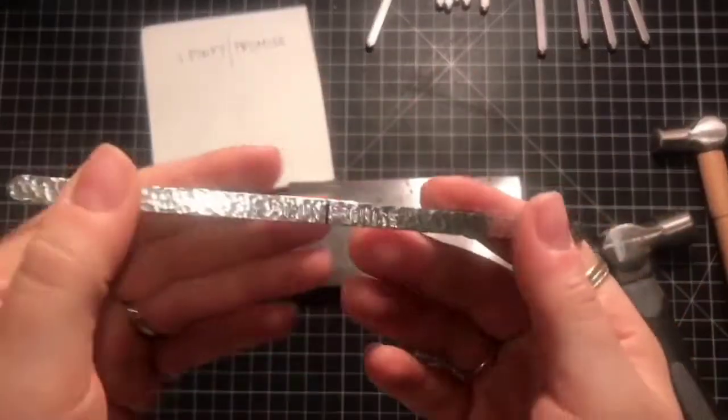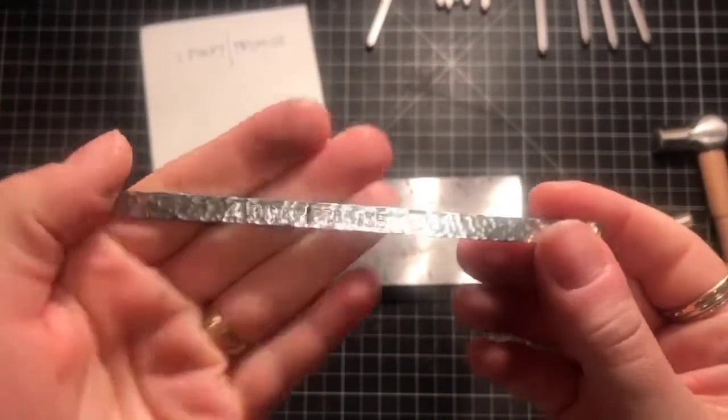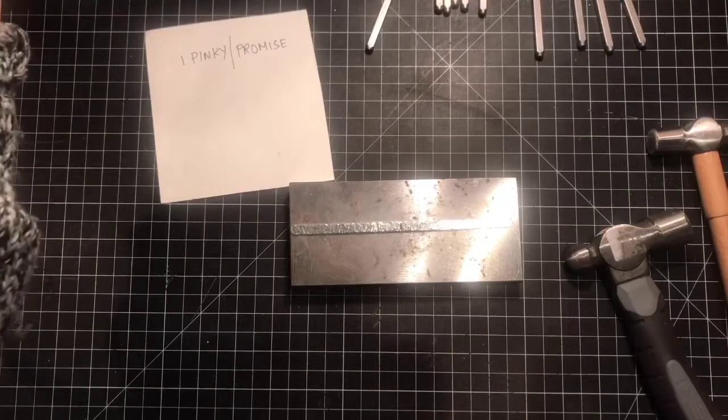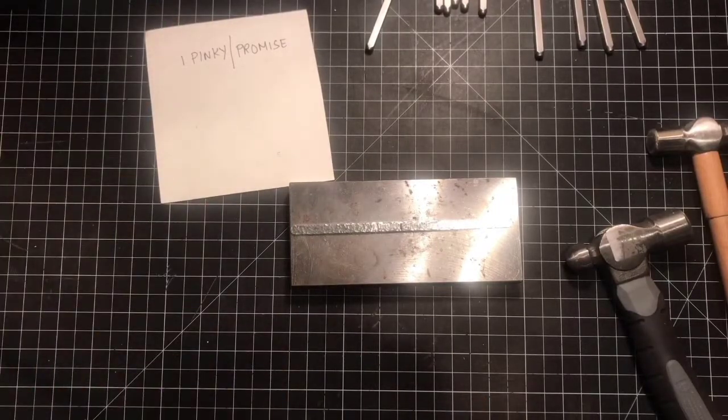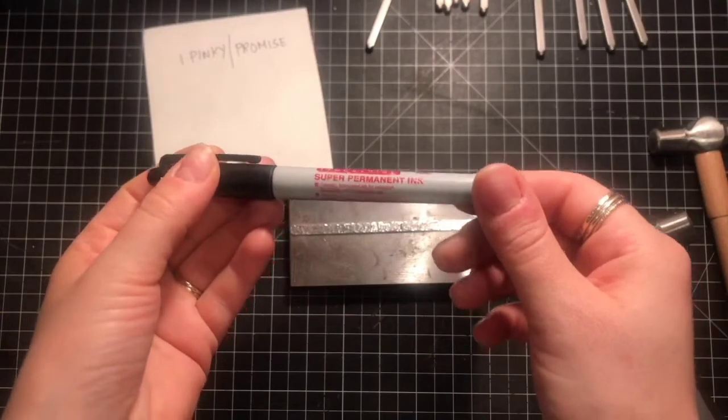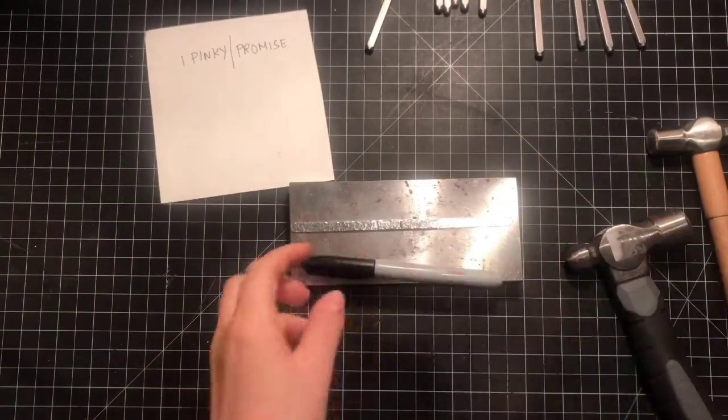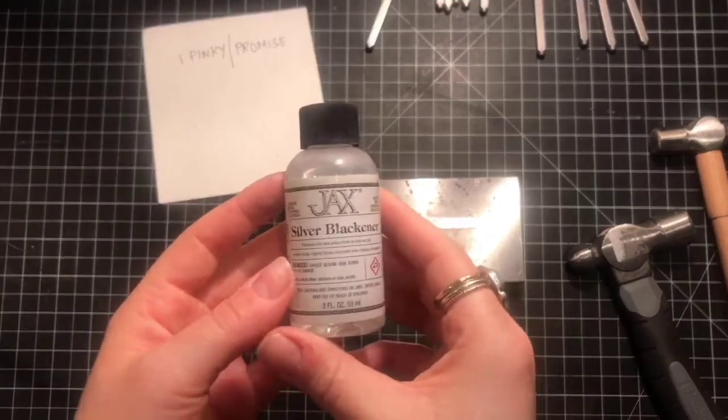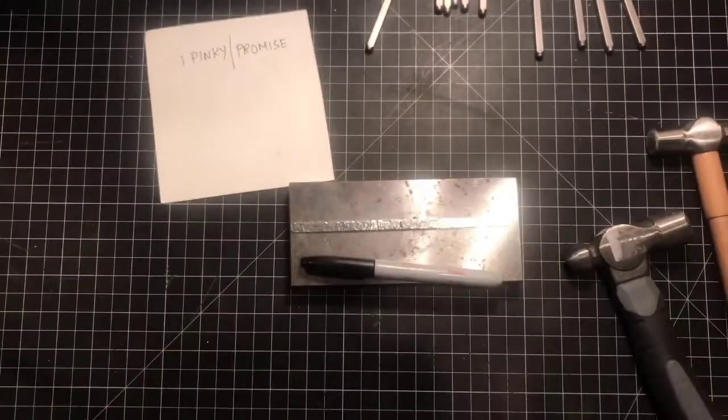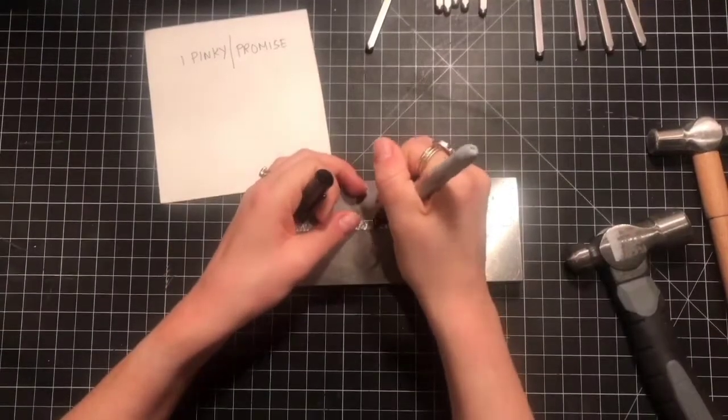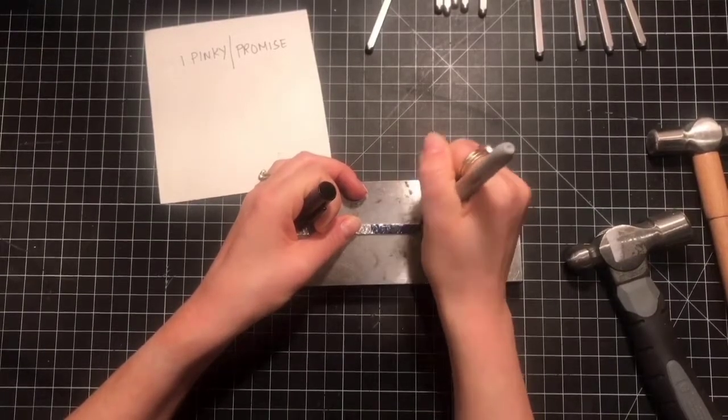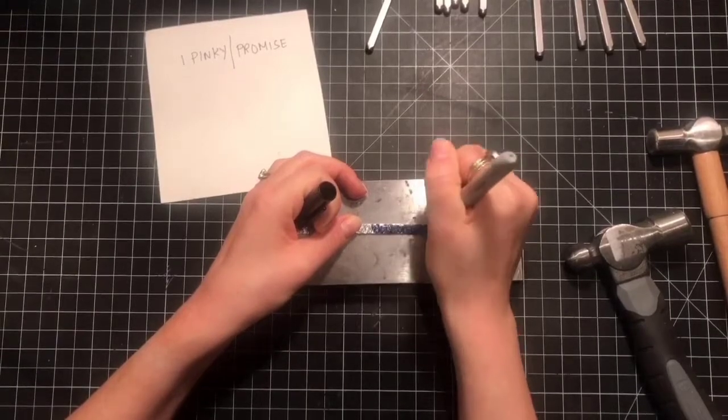All right. So we are finished stamping. So if you can see here, I pinky promise. So what I'm going to do, this is the fun part is when we can blacken it in to see our results. And so I use an industrial strength Sharpie as simple as it sounds. It's super permanent. You can use chemicals. I do have this, what's called Jack silver blackener. I don't use it on these pieces, but you can. I think the Sharpie makes it darker. So I continue to use the Sharpie. And then all you do is just really get in, doesn't have to be pretty, get into the grooves.